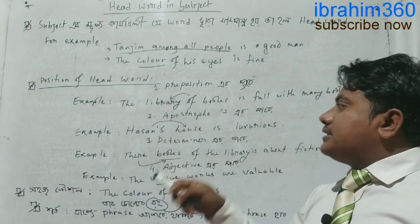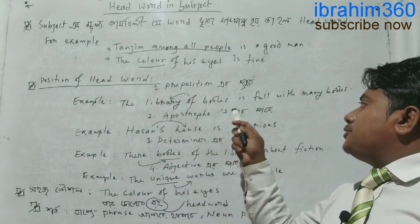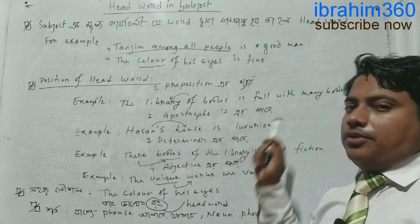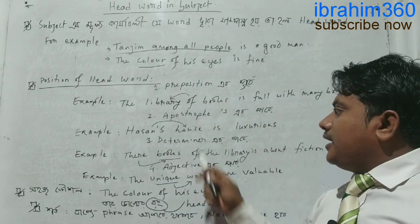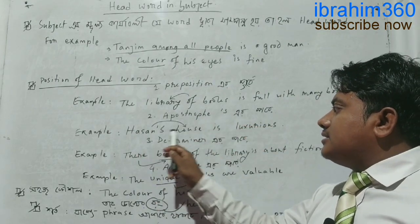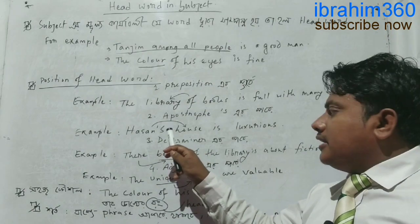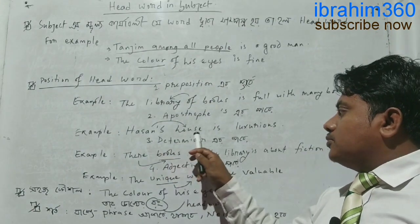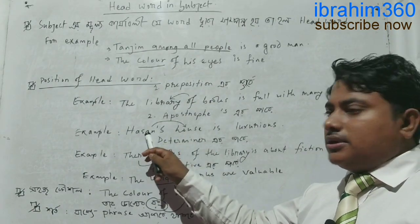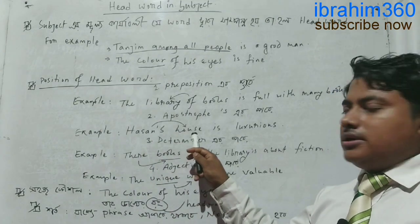The second rule is apostrophe S. With apostrophe S, the first word is the headword. For example: 'Hassan's house is luxurious.' Hassan is the headword, not house.